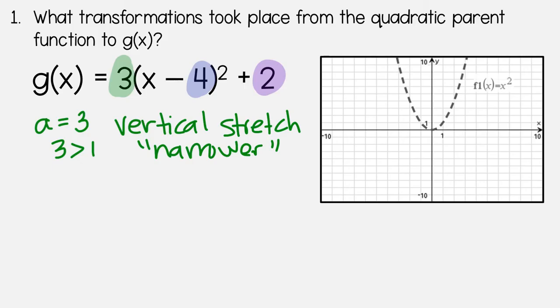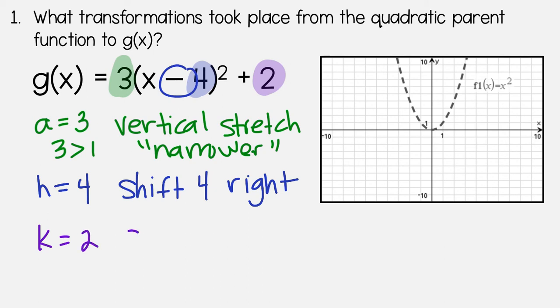And then with h, it equals – remember that you always do opposite. So x equals positive 4, which means that we are going to shift 4 to the right. And then last, k equals 2. Since 2 is positive, we're going to shift 2 units up.